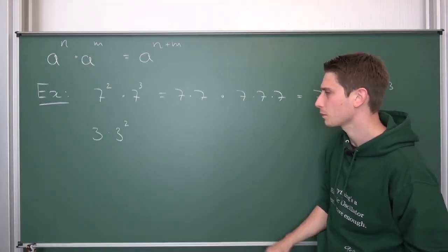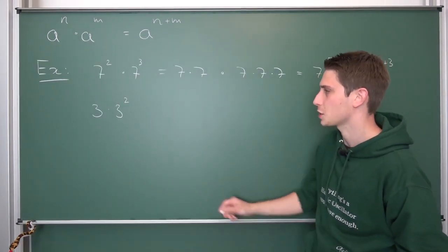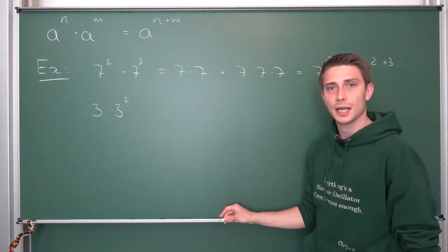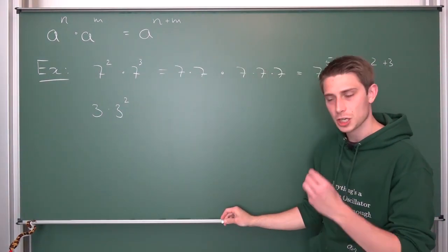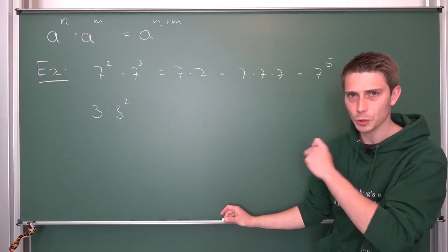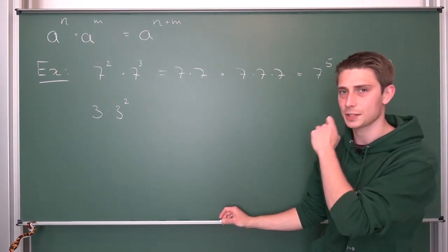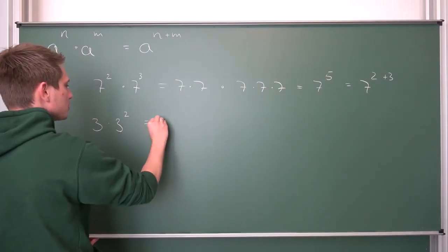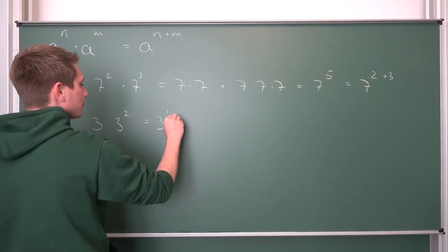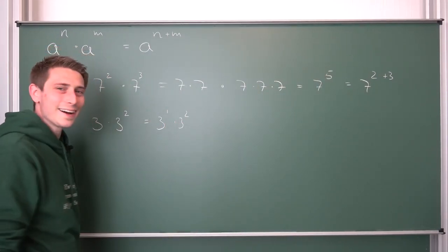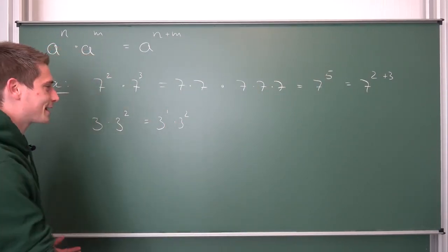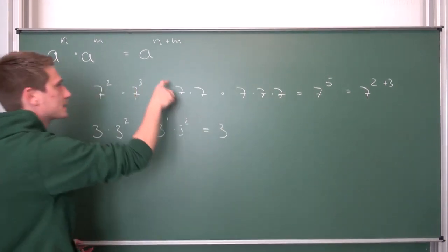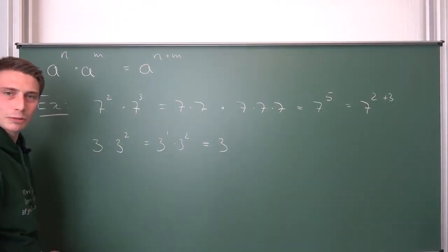Remember episode 1 of exponentiation. If we have just a 3 standing there, this is 3 multiplied with itself exactly once. So 3 is nothing but 3 to the first power. Now it makes sense! We have the same base.